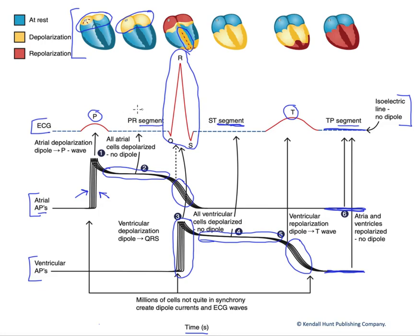During the PR segment, that was when atrial contraction occurred. During the ST segment, that's when the majority of ventricular contraction occurs. TP segment, the heart is completely in diastole. It's relaxed. It is filling with venous return, blood coming back from the pulmonary and systemic circuits, filling the ventricles.